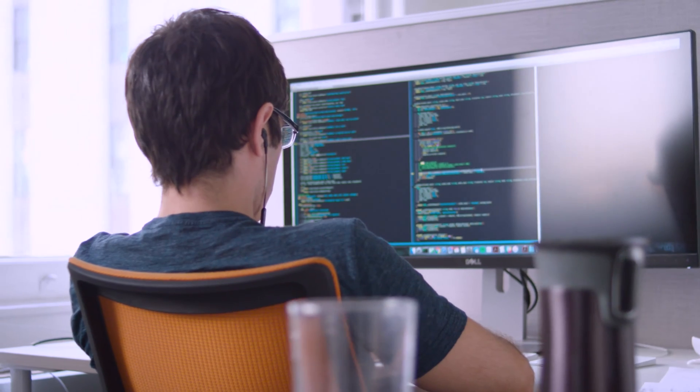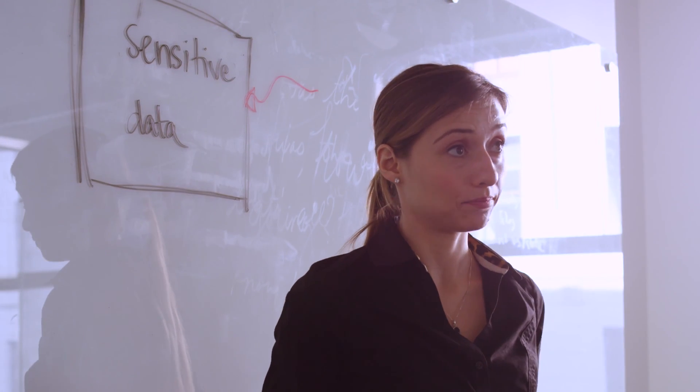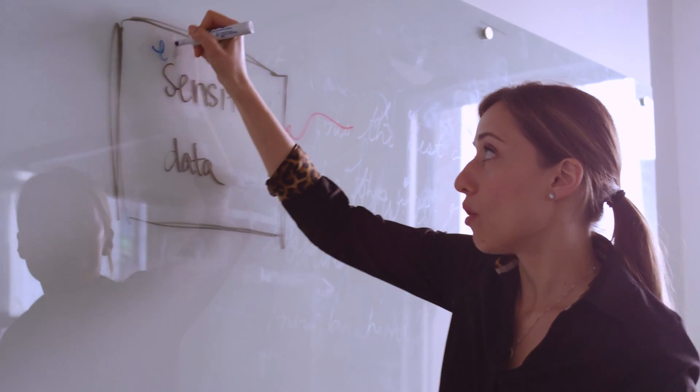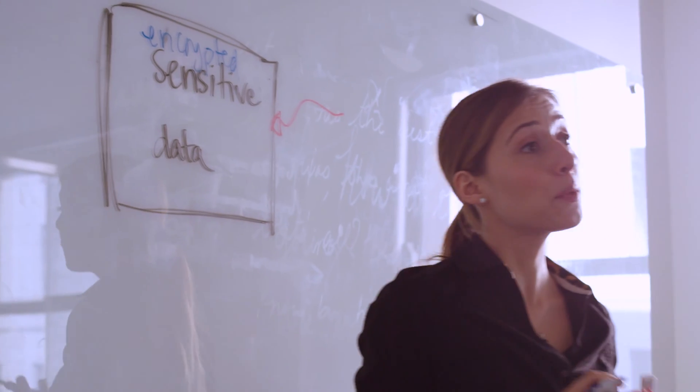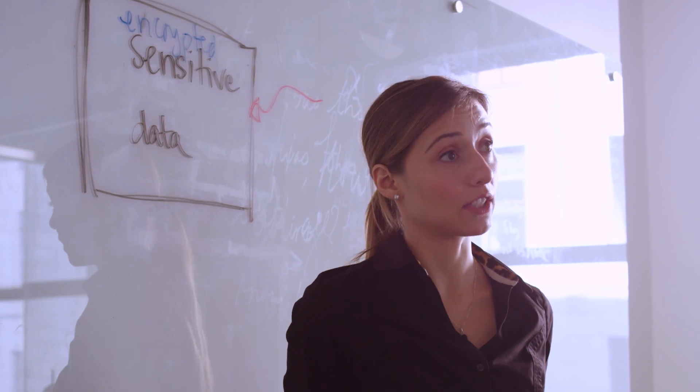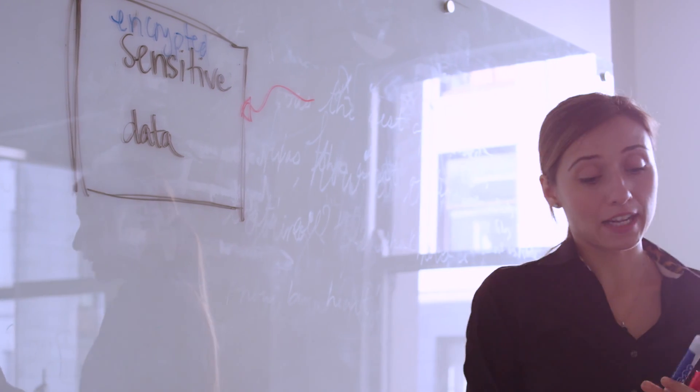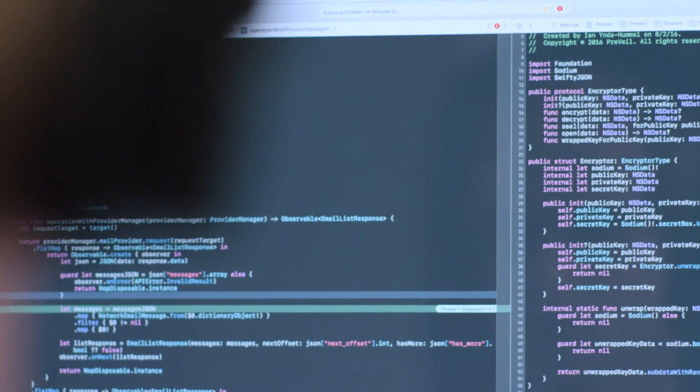In Prevail, we assume that an attacker has already broken in and has gotten access to the data. So in Prevail, we always keep the data on the server encrypted, and we never give the decryption key to the server. So even if an attacker breaks in and gets access to all of this data, they can only see encrypted data, which is useless.